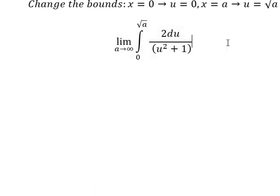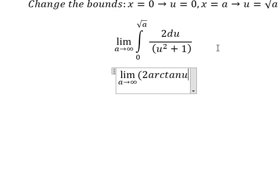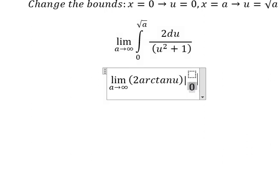Next, the integration of 2du over u squared plus 1 will give us 2 arctan u. Then I put the bounds from 0 to the square root of a.